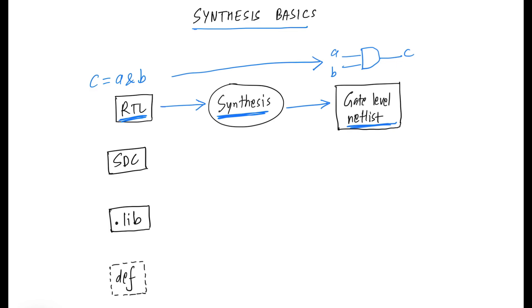Besides RTL, there are a few other inputs which are required for the synthesis flow. We need the SDCs or the design constraints for synthesis. SDCs will have your clock definitions, your IO port constraints, your timing exceptions like false paths and multi-cycle paths and many other things, which we will discuss in detail in another video.